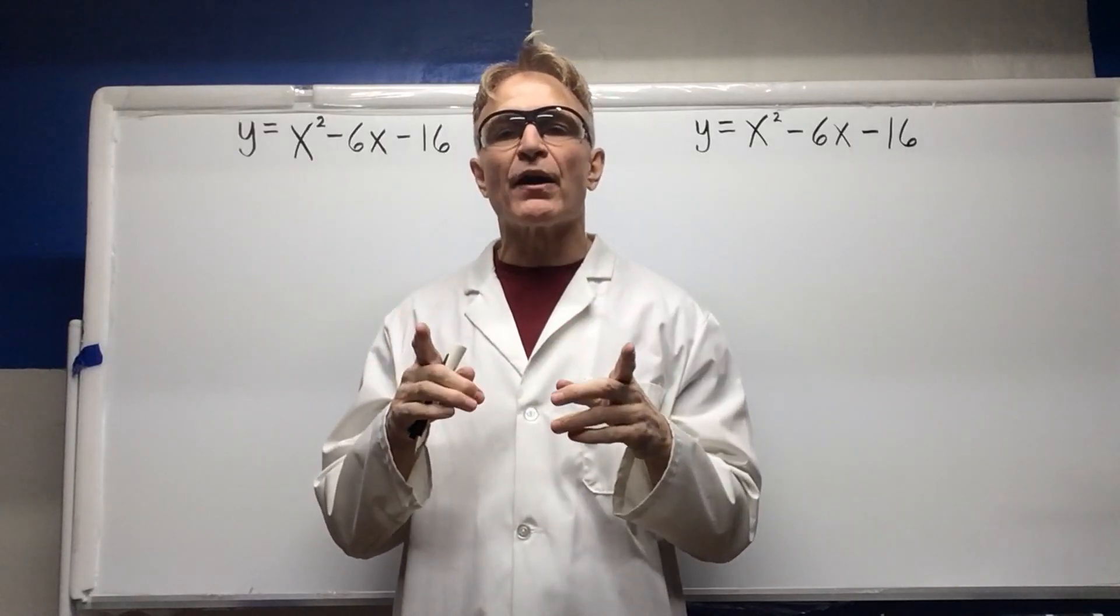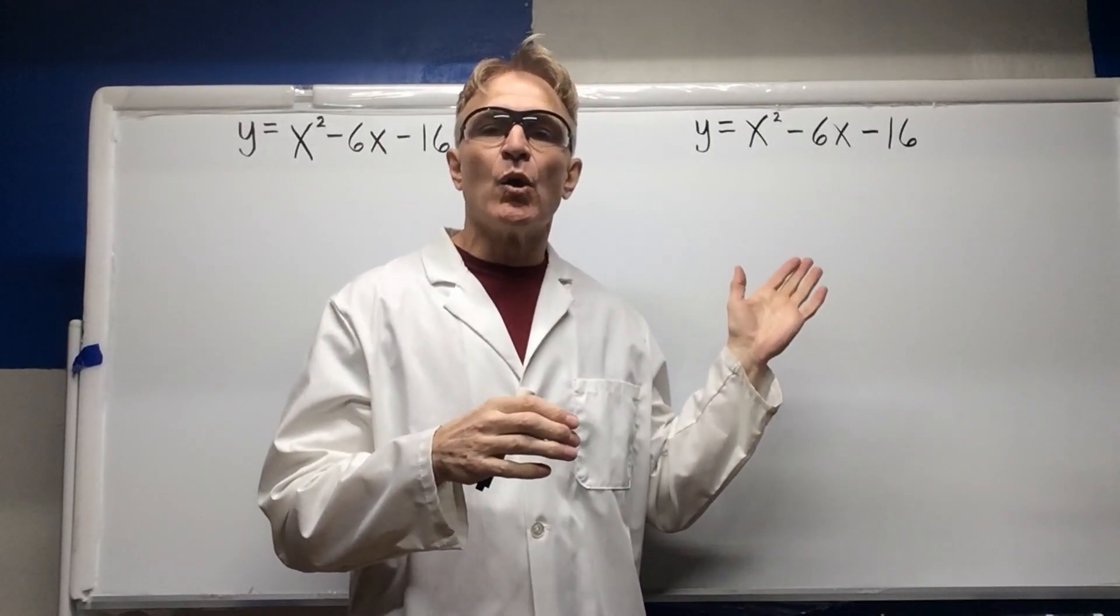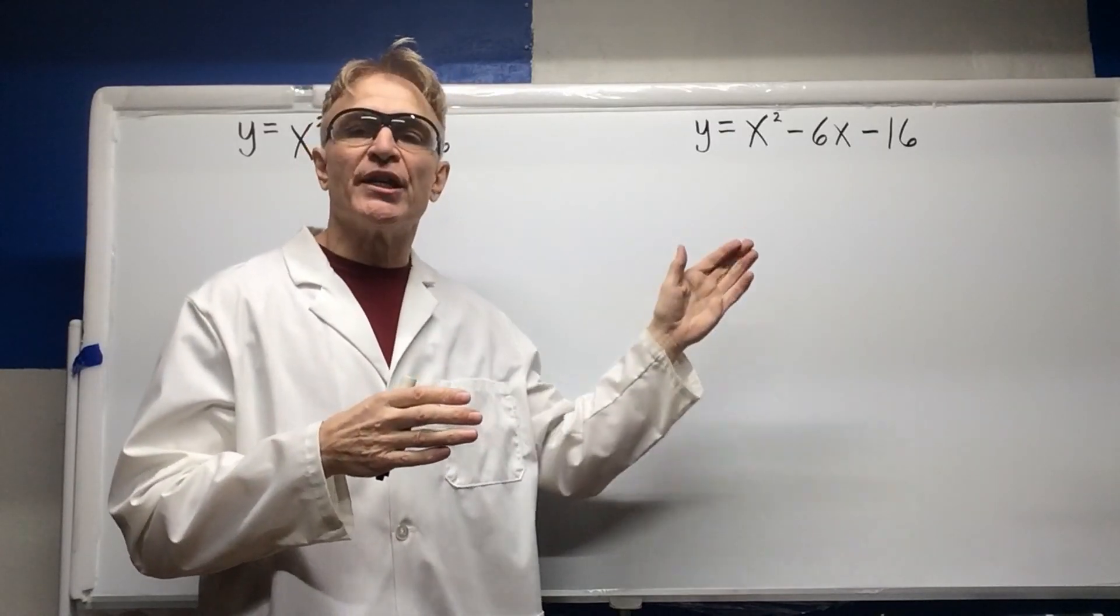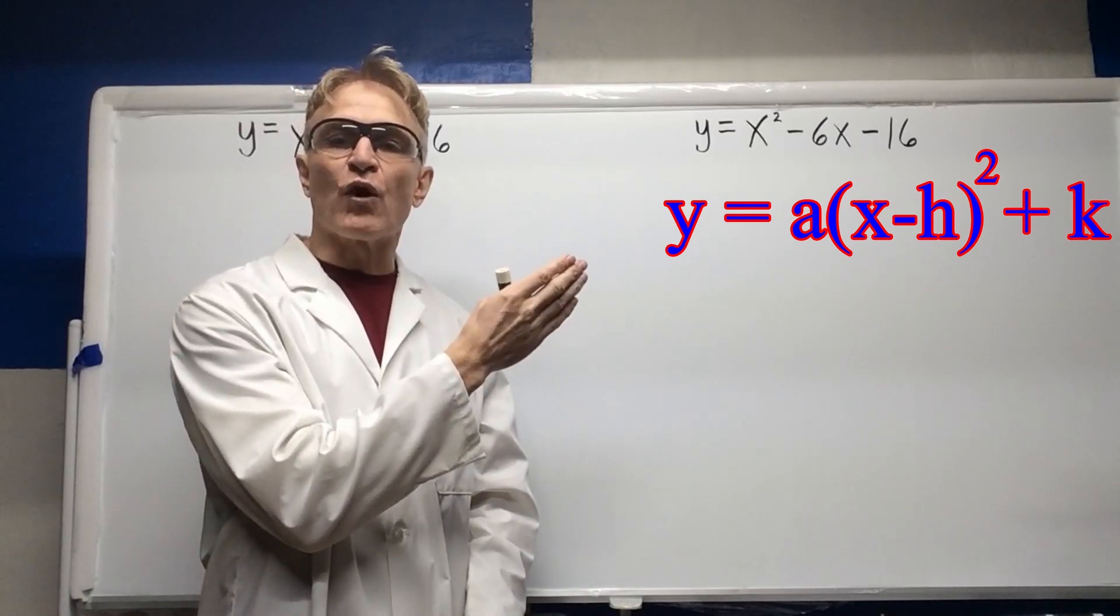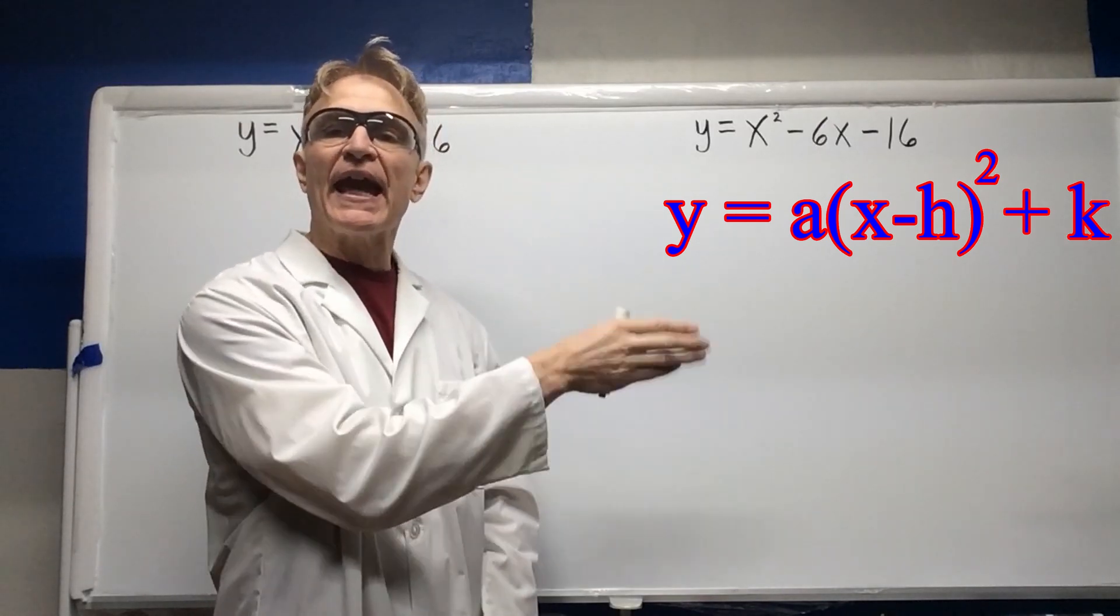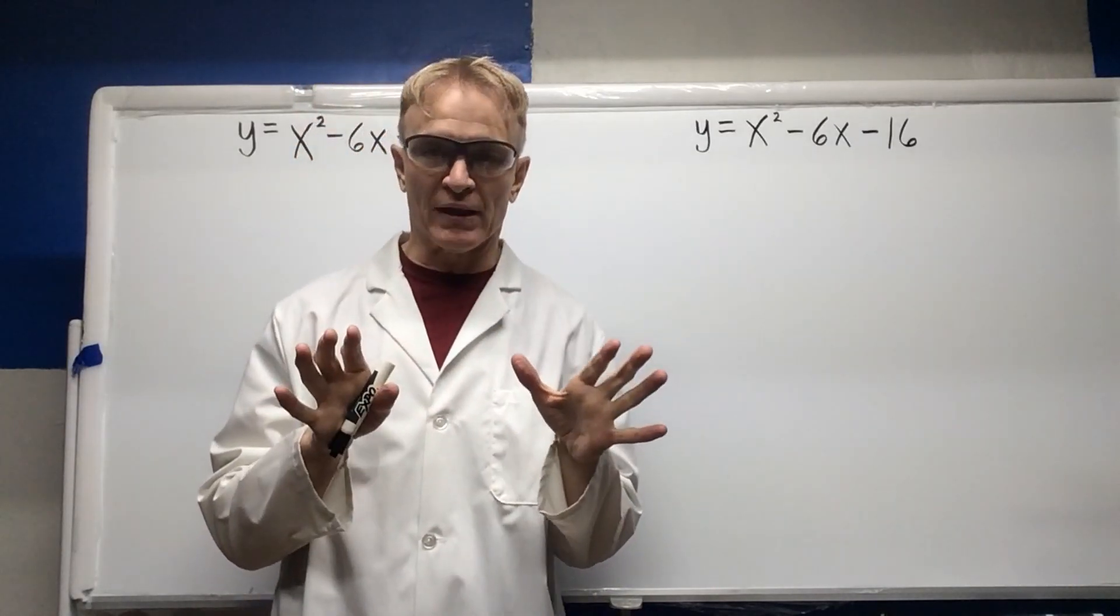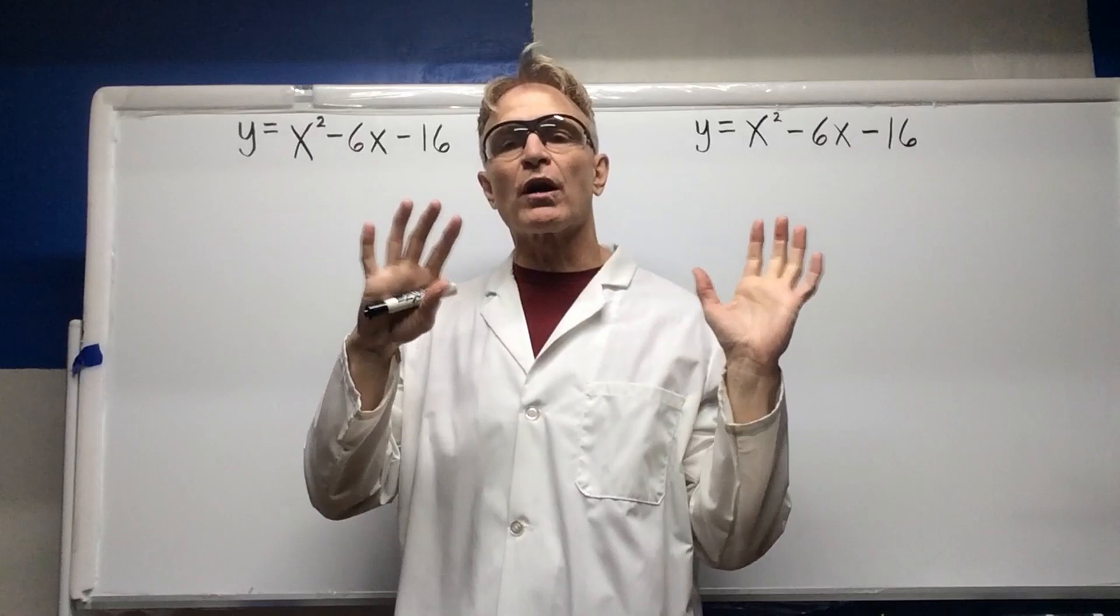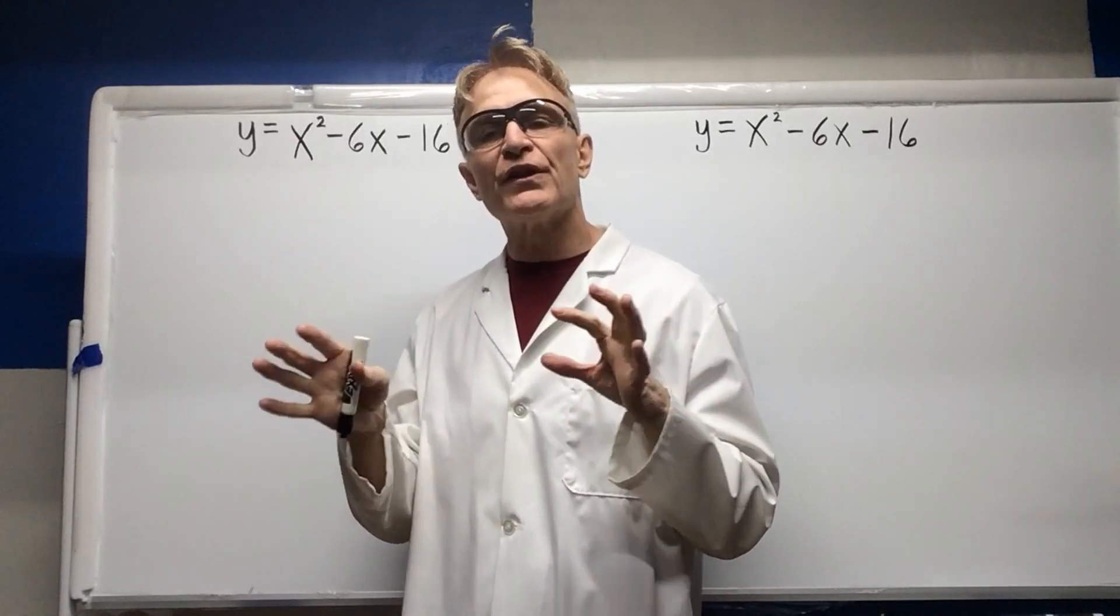On this side, what we are going to do is, we are going to manipulate the equation into this format. When it is in this format, the h is the x value and the k is the y value of the vertex of the parabola. So we begin this side by setting it equal to zero and we will work both sides as we are going along. So you can see that we are going to use completing the square in two different types of ways.